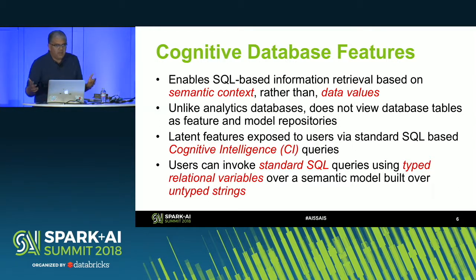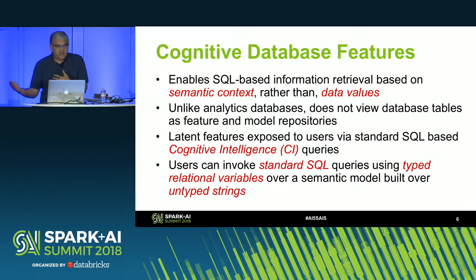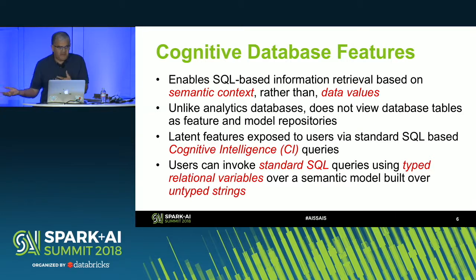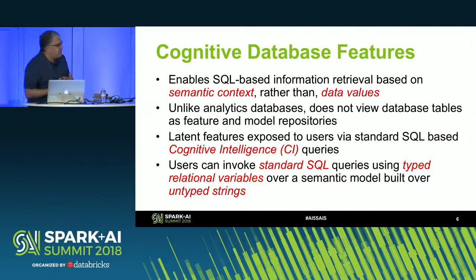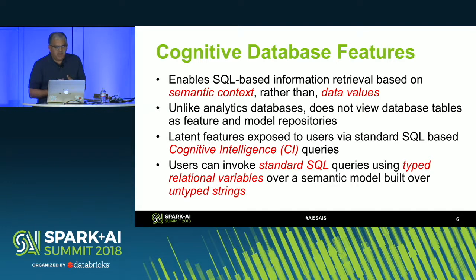Unlike analytics databases such as a Spark DataFrame used as input to Spark ML — which can be viewed as a database storing features and analytic model results — in our case, the tokens of a relational database are viewed as input to neural network models. The latent features of these tokens are extracted by the word embedding model and then used in standard SQL-based cognitive intelligence queries.